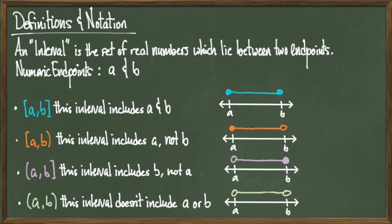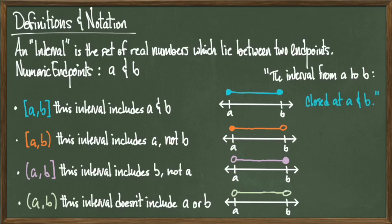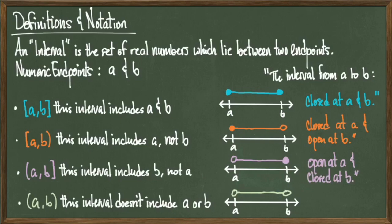At this point we know how to write and draw four types of intervals with numeric endpoints. Now we can discuss how to describe them verbally. The interval [a, b] is described as closed at a and b — it's called a closed interval. [a, b) is closed at a and open at b. (a, b] is open at a and closed at b. And (a, b) is open at both a and b — it's called an open interval. The two in the middle are called half-open intervals. The whole point is to have an easy, fast, and efficient way of describing sets.